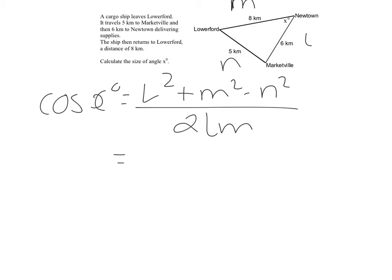If we're looking for cos X, then we're looking for cos of N. So cos X is going to be L squared plus M squared minus N squared divided by 2LM. And again, just filling in that information, we're going to have 6 squared plus 8 squared minus 5 squared over 2 times 6 times 8.